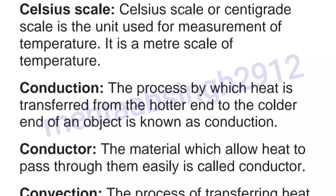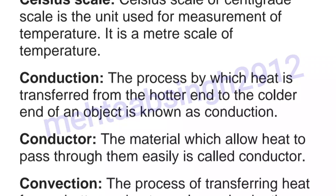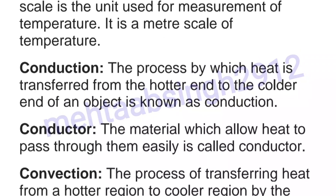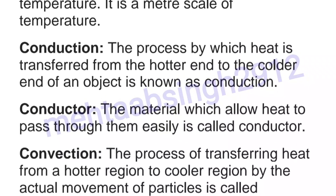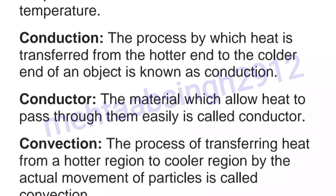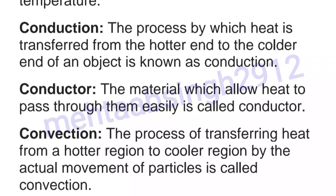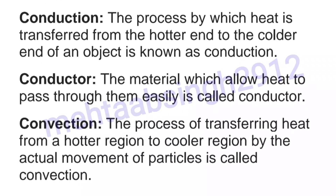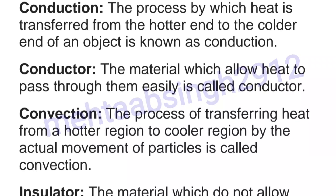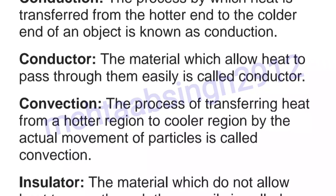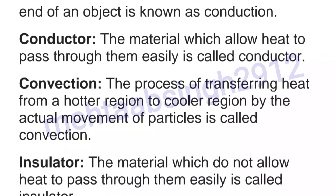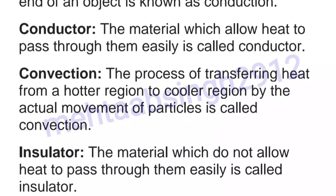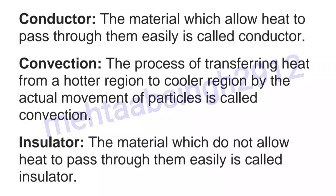Important terms. Celsius scale: the Celsius or centigrade scale is the unit used for measurement of temperature. Conduction: the process by which heat is transferred from the hotter end to the colder end of an object is known as conduction. Conductor: the material which allows heat to pass through it easily is called a conductor. Convection: the process of transferring heat from a hotter region to a cooler region by the actual movement of particles is called convection.